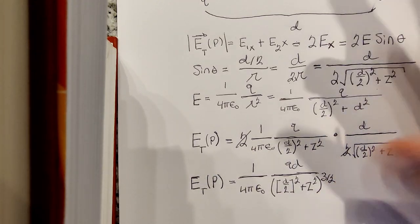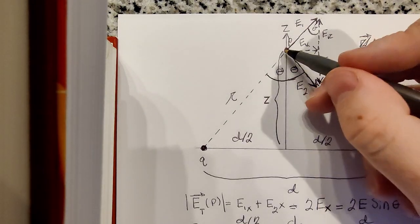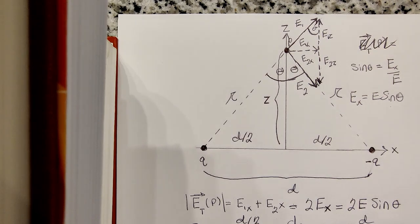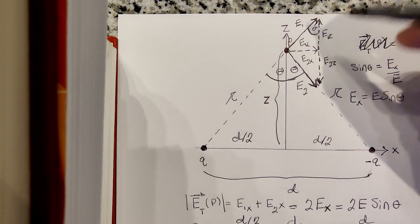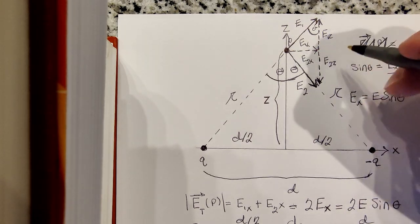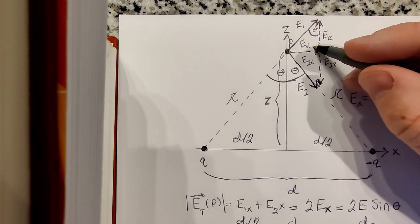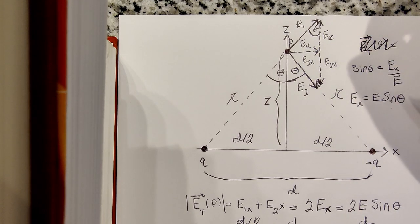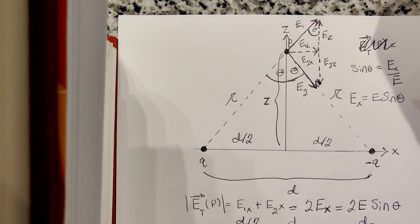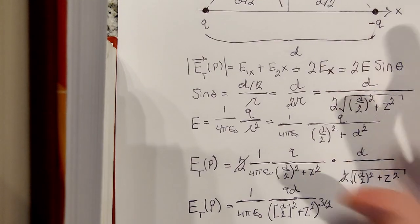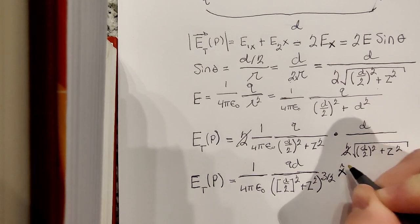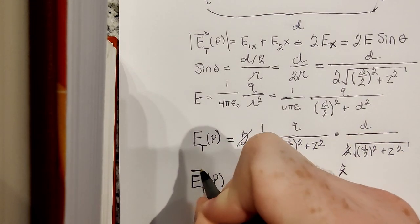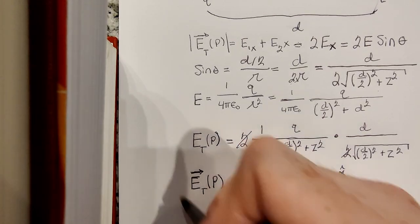But we don't want just the magnitude, we want the direction of our field. We know that the vertical components cancel and so the x components are the only things contributing to the electric field here. And what direction are they pointing? Well, they're pointing in the x direction. And therefore the unit vector we use would just be x hat.